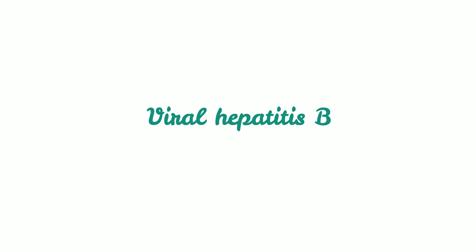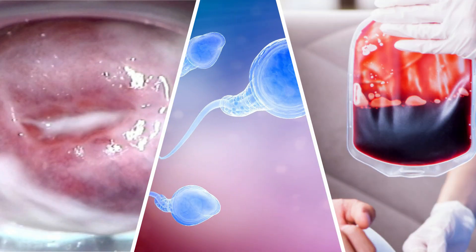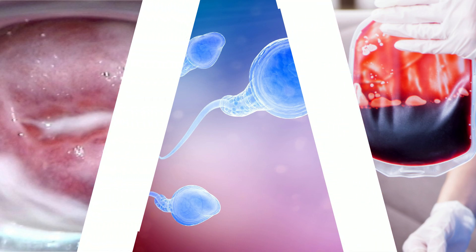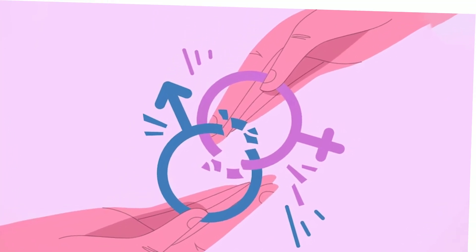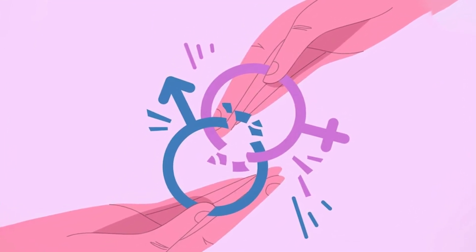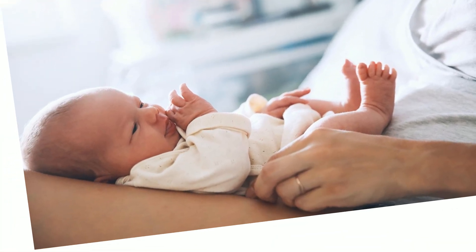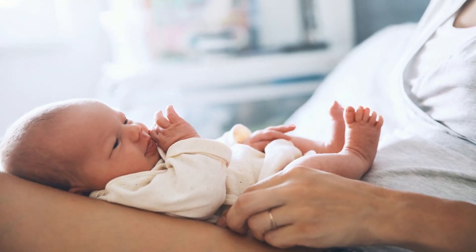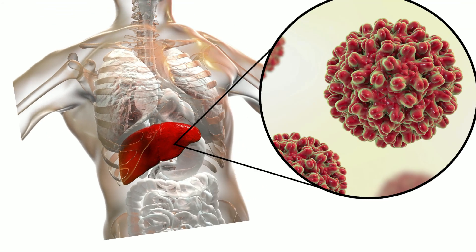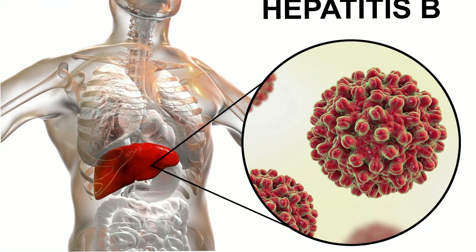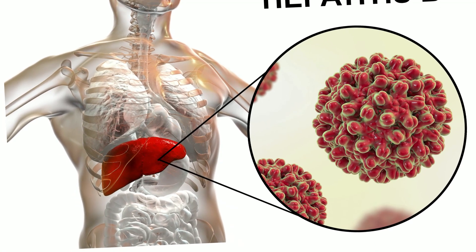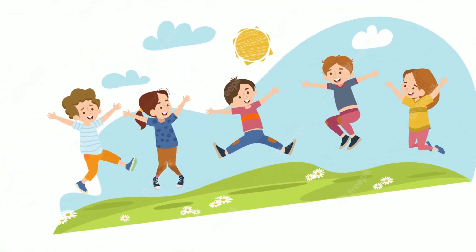What about hepatitis B? When blood, semen, vaginal secretions, or other bodily fluids from a person who has hepatitis B enter the bloodstream of someone who does not, the hepatitis B virus is transmitted. Unsafe sexual contact or the sharing of injecting equipment are two behaviors that could facilitate the spread. Hepatitis B can also be transmitted from mother to child at birth or shortly after birth.